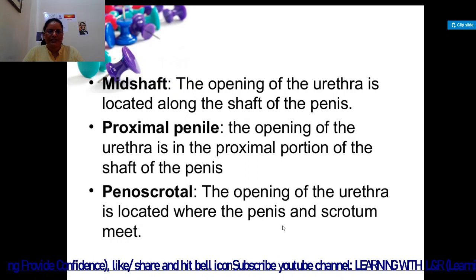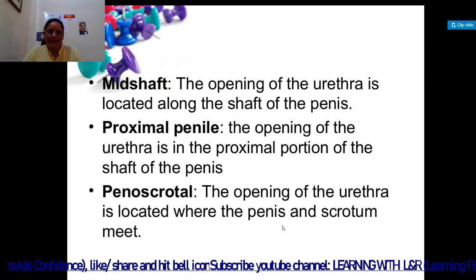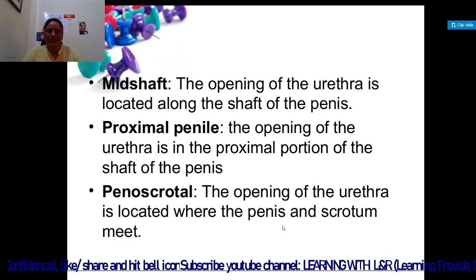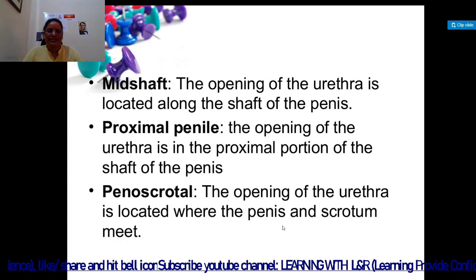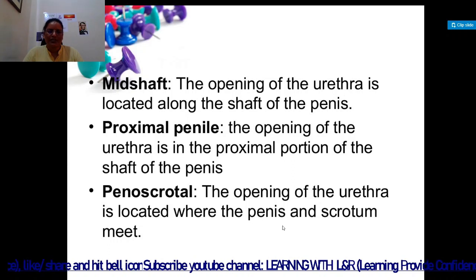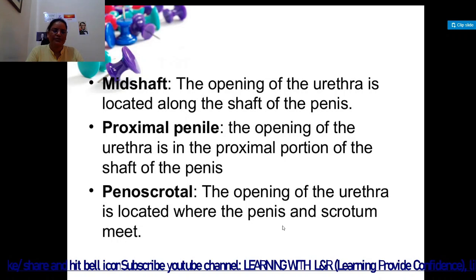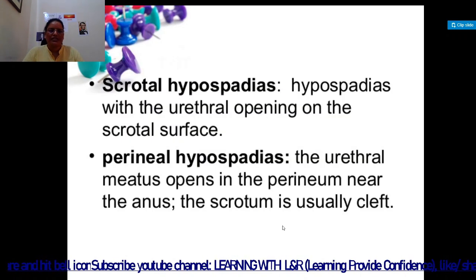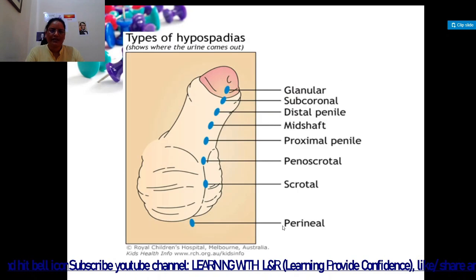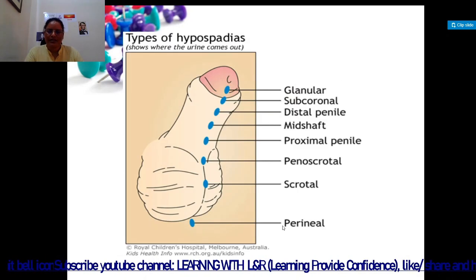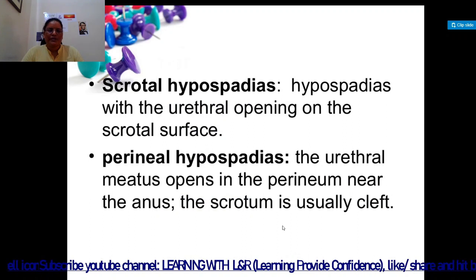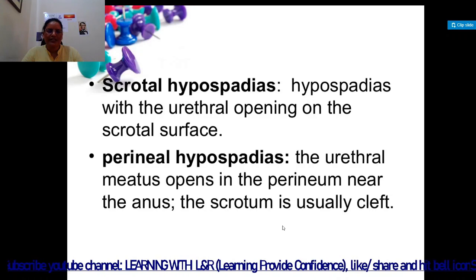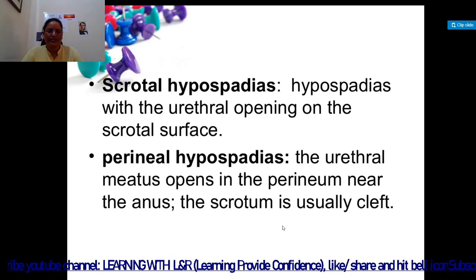According to location, types range from perineal, scrotal, penoscrotal, proximal penile, mid-shaft, distal penile, subcoronal, and glandular. Mid-shaft means the opening is along the shaft of the penis. Proximal penile means the opening is in the proximal portion of the shaft. Penoscrotal means the opening is located where the penis and scrotum meet.